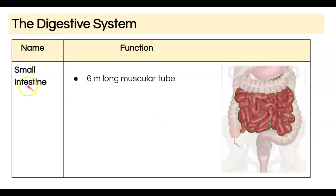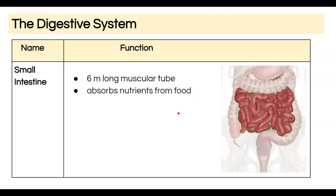You might wonder why it's called the small intestine if it's so long. The 'small' refers to the diameter, which is smaller than that of the large intestine. The job of the small intestine is to absorb nutrients from food — at this point most of the breakdown has happened, and the smaller molecules are absorbed through the walls of the small intestine into your circulatory system.